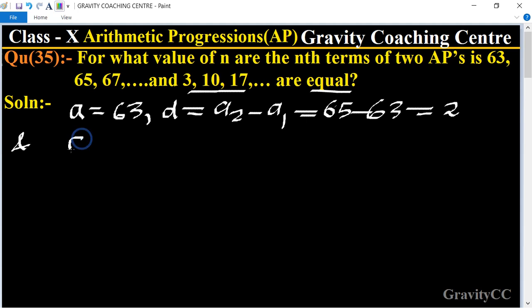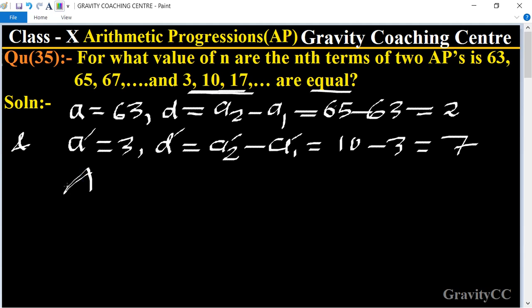And first term of the second sequence, A dash equals 3, and d dash equals second term minus first term. So its second term is 10 minus 3 equals 7.